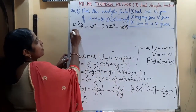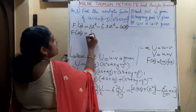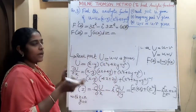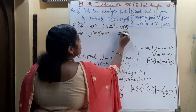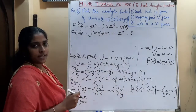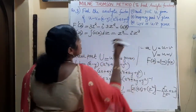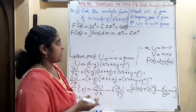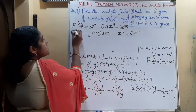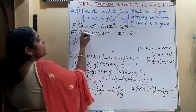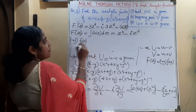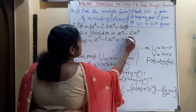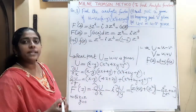Integrating G(z): capital F(z) = ∫(3 − 3i)Z² dz = (3 − 3i)·Z³/3 + C = (1 − i)Z³ + C. Since capital F(z) = (1 + i)·f(z), we have (1 + i)·f(z) = (1 − i)Z³. Dividing both sides by (1 + i): f(z) = (1 − i)Z³ / (1 + i).